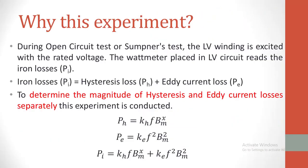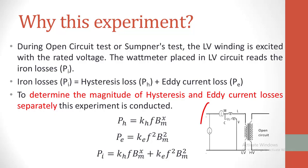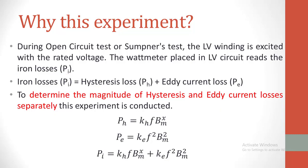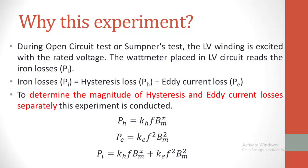During this test, the LV side is excited with the rated voltage, and hence the wattmeter placed on the LV side will read the iron losses. We know that the iron losses are the sum of hysteresis loss and eddy current losses. The main intention of conducting this experiment is to determine the magnitude of eddy current losses and hysteresis losses separately. This is the formula for hysteresis losses and this is the formula for eddy current loss.